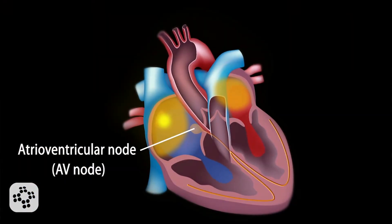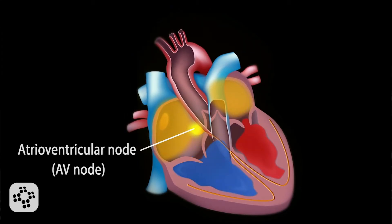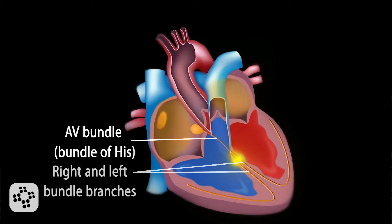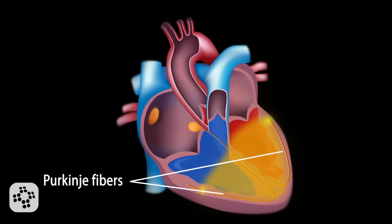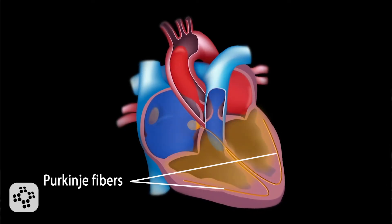From the atria, the electrical impulse travels along the pathway to the atrioventricular, or AV node, where it may be delayed strategically before it moves through the bundle of His and ultimately to the Purkinje fibers, which travel down through and wrap around the ventricles, completing the electromechanical cycle of a complete heartbeat.